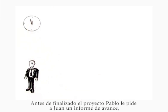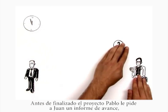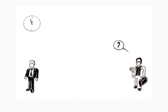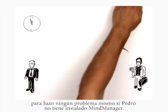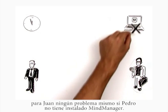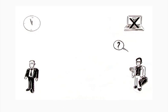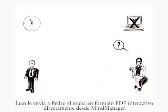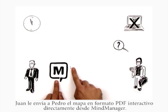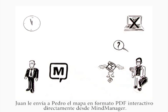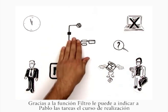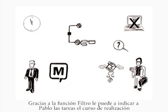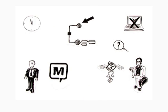Just before the project is due to be delivered, Ian requests a status report. This doesn't pose a problem for Paul at all, even though Ian doesn't have the MindManager software installed. Paul simply sends him the map as an interactive PDF by email, directly from MindManager. Thanks to the filter function, he can show Ian exactly which tasks are still incomplete and which have the highest priority.